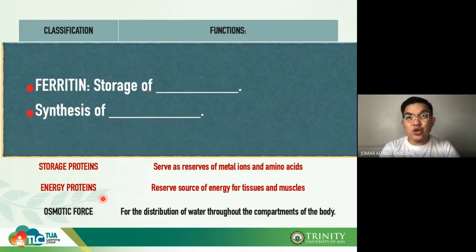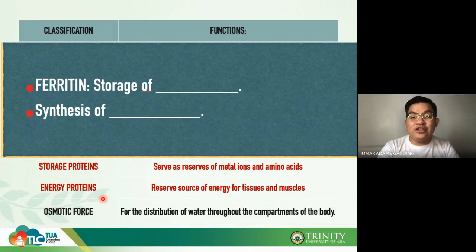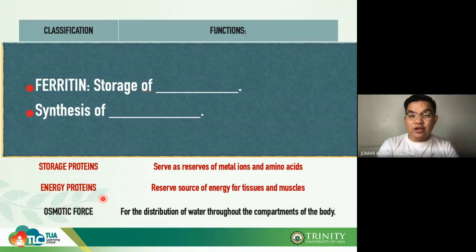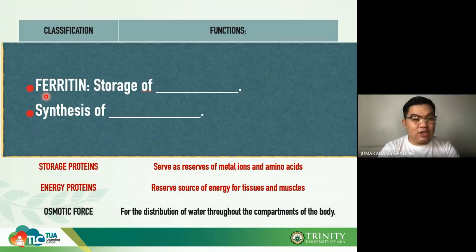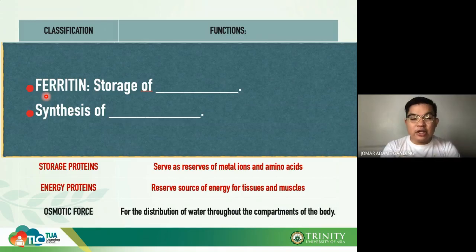Moving forward to storage proteins: they serve as a reserve of metal ions and amino acids. Your storage pool of amino acids is found in your liver. Ferritin is an example of a storage protein — it is the storage form of iron.